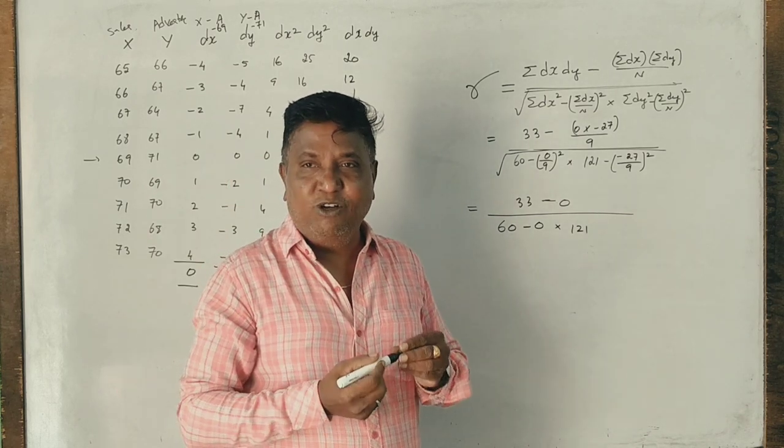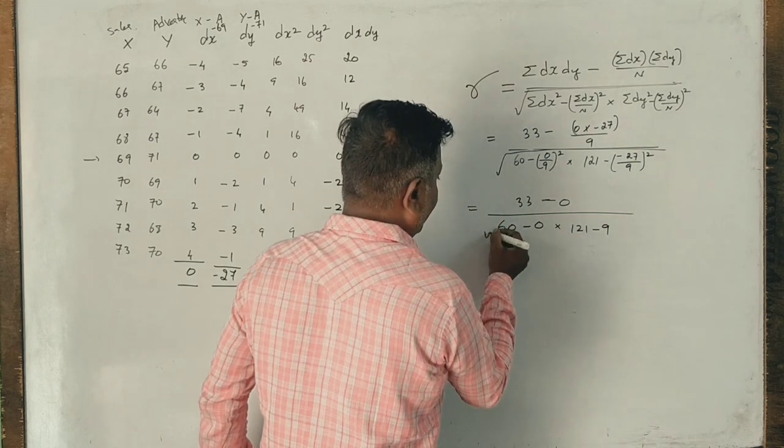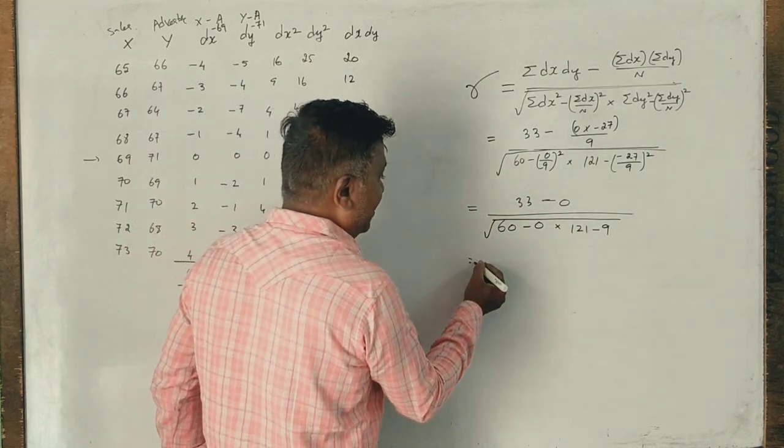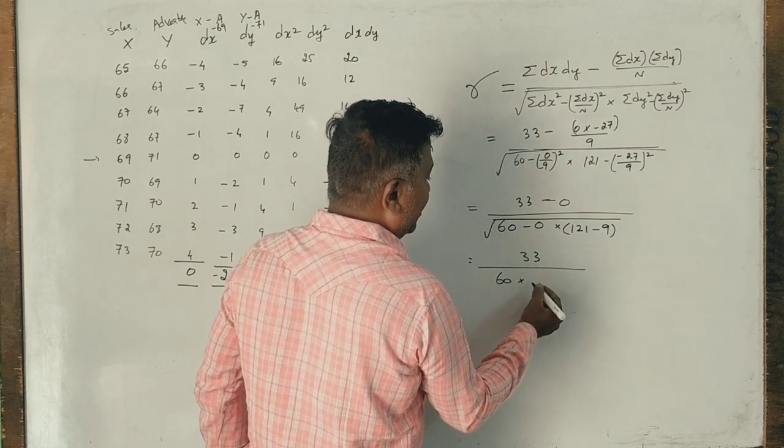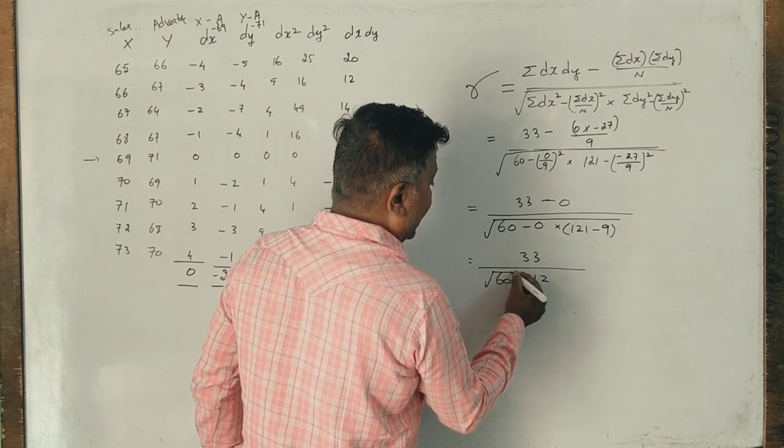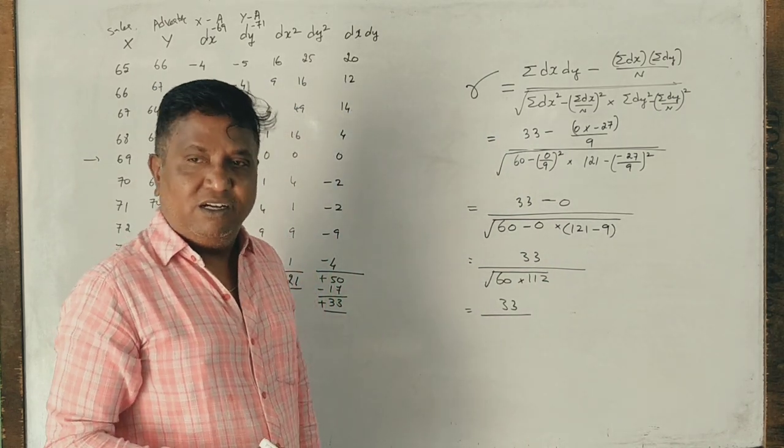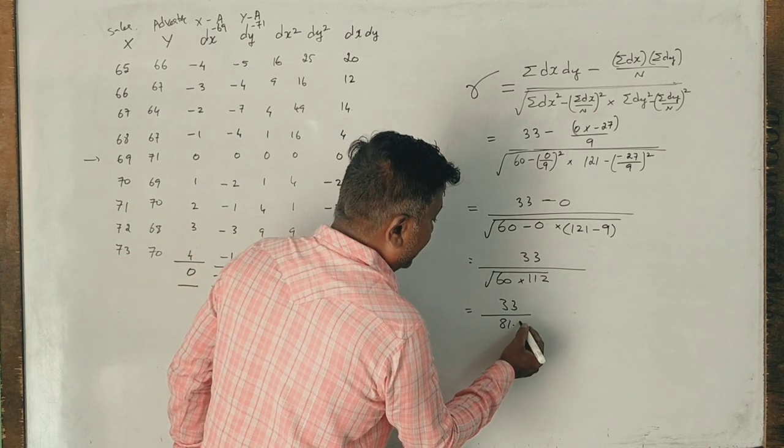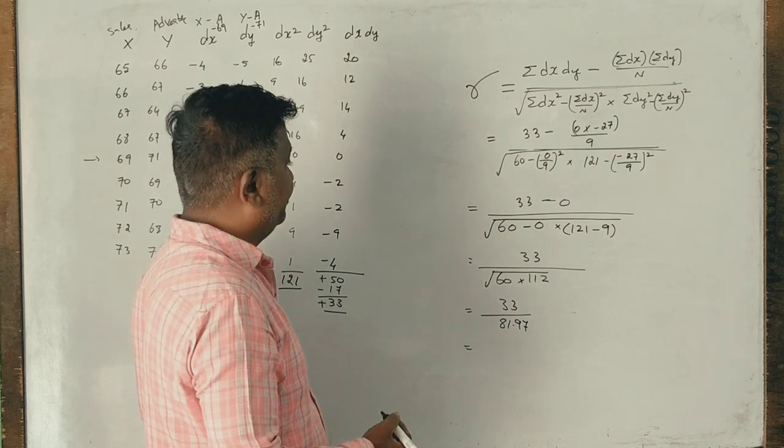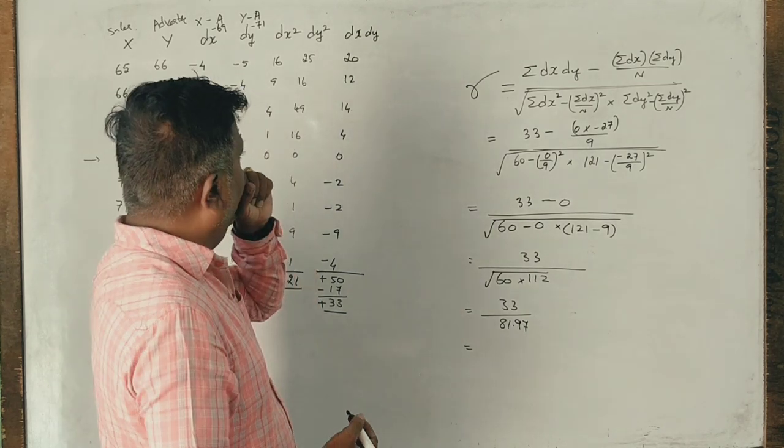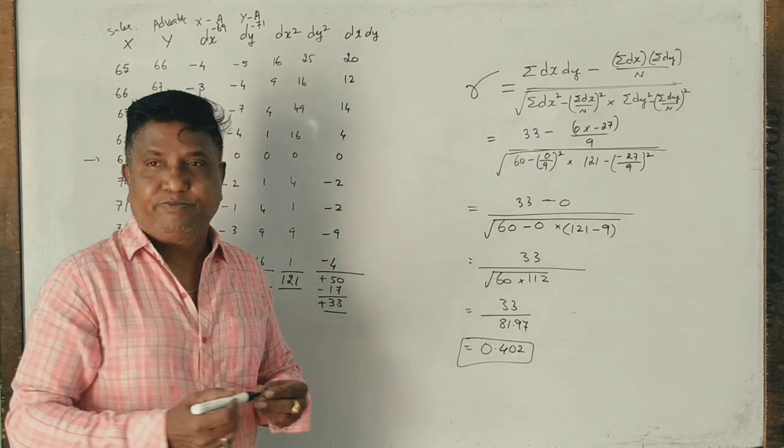Here plus 9. Here minus 3, minus 4, minus 2, minus 8, minus 9. Now 33, 60 into 121 minus 9 is the mark. 33 divided by 16 into 1.12 square root of that 81.97 say 0.402. That's what I got.